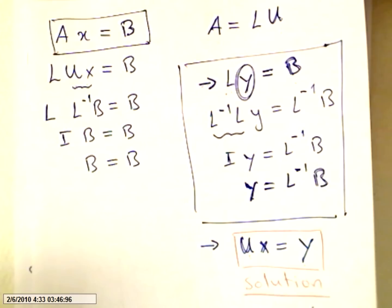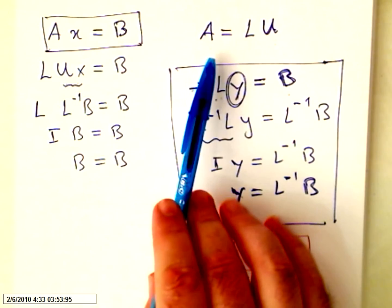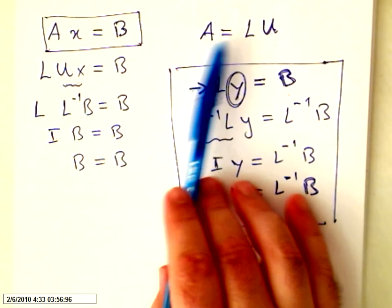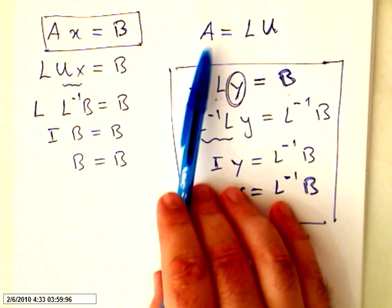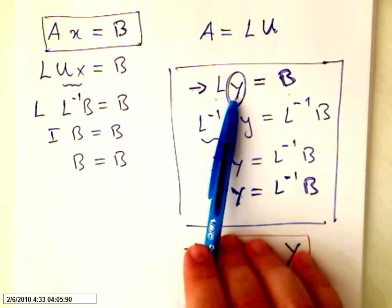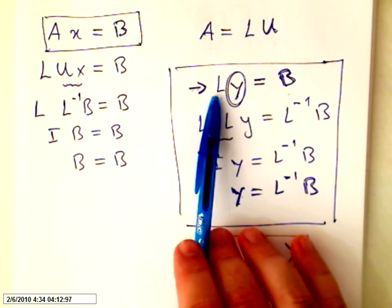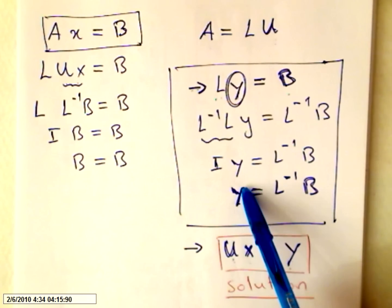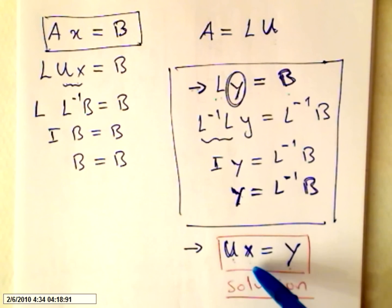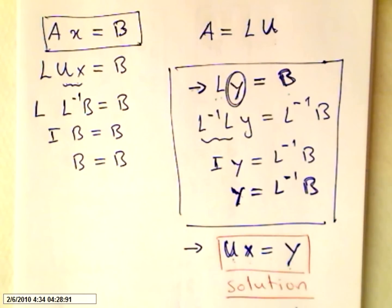What we have done is: first, we put the problem as AX equals B. Then a decomposition of matrix A. Then we made the product of lower matrix times new variables Y equals B, the independent values. When we finished this operation, we found Y. Now we do upper times X, the variables, equals Y. And the solution of this last system is the solution of the system of equations.